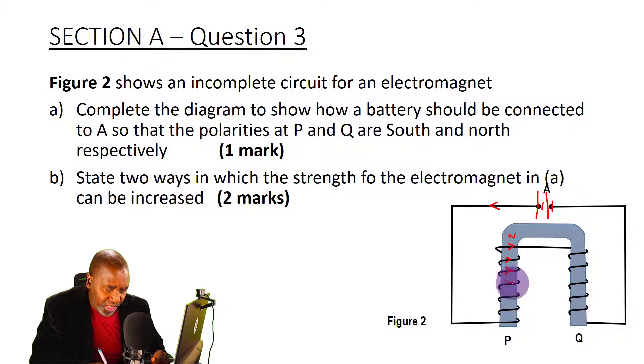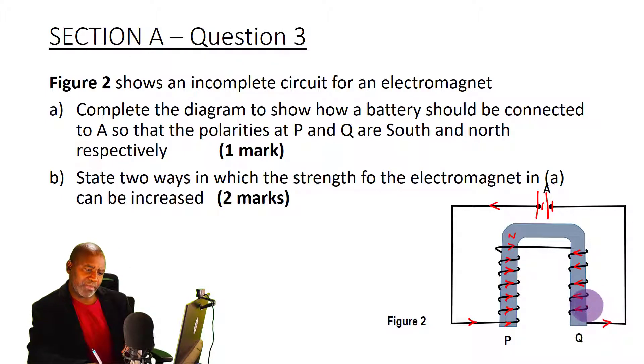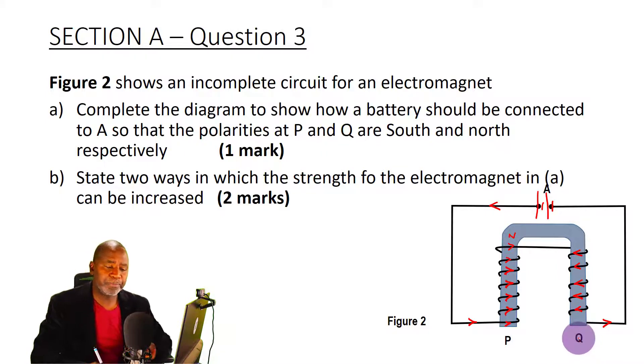So on the diagram you can go ahead and indicate the directions of the current as I'm showing you here. And on the other side definitely it will be like this. It's a bit challenging inking this particular slide but you get the point. The arrow direction is pointing making P to be south and Q to be the north pole of that magnet.